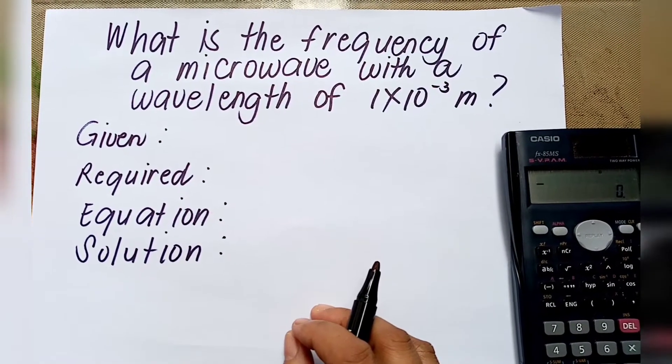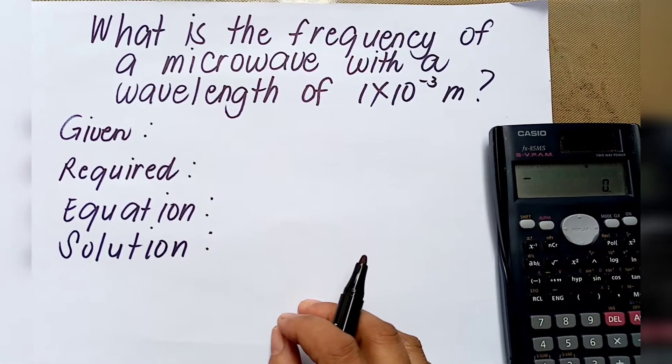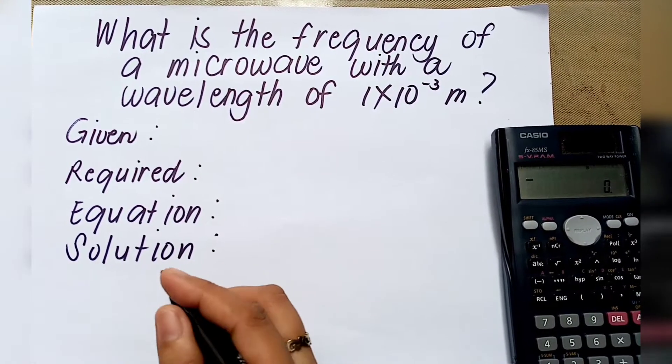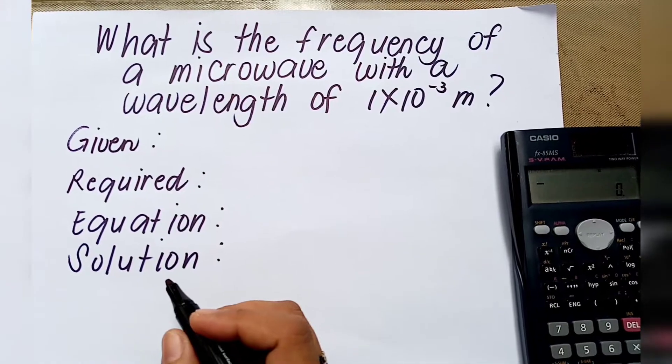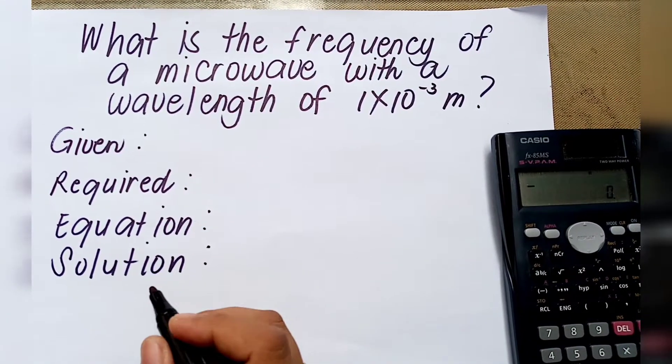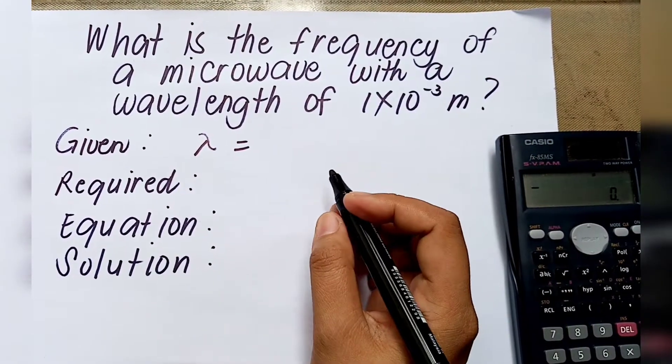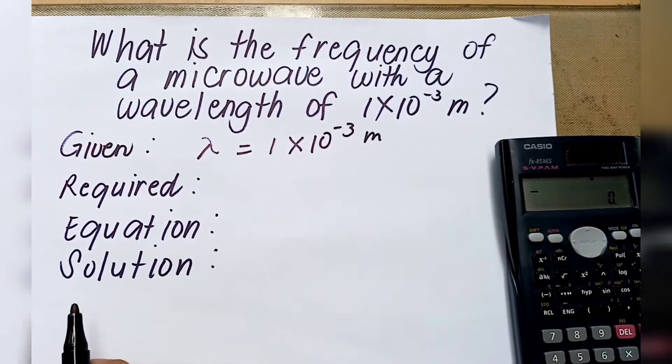What is the frequency of a microwave with a wavelength of 1 times 10 to the negative 3 meter? Let us identify the given in this problem. Given here is the wavelength, which is equivalent to 1 times 10 to the negative 3 meter.